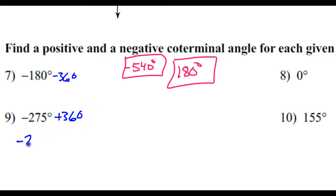If I take negative 275 degrees and I subtract 360, that's going to give me a negative coterminal angle.